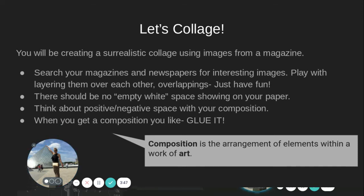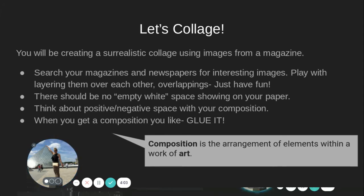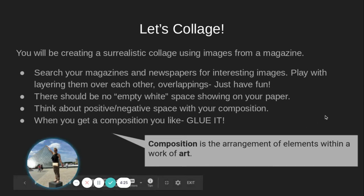Search your magazines and newspapers for interesting images. Play with layering them over each other, overlapping — maybe cut one completely out and use one as a backdrop. Just have fun and experiment with it. There should be no empty white space showing on your paper, so make sure everything is completely covered. Think about the positive or negative space in your composition. When you get a composition you like, glue it. A composition is the arrangement of elements within a work of art — once you get it looking the way you want, glue it down and secure it.